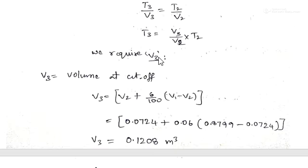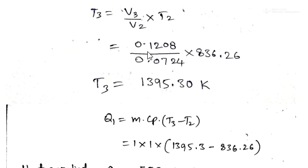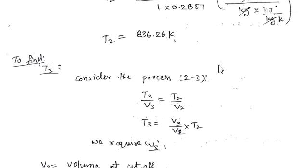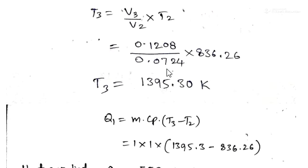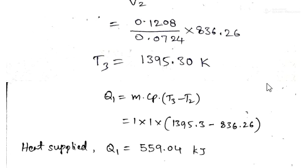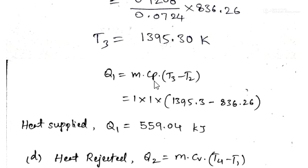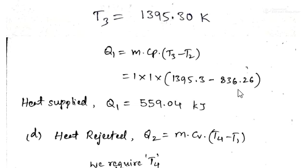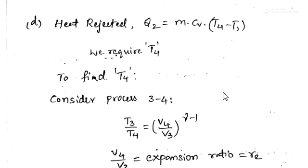T3 = (V3 by V2) × T2 = (0.1208 by 0.0724) × 836.26 = 1395.30 Kelvin. Heat supplied = mCp(T3 − T2) = 1 × 1 × (1395.3 − 836.26) = 559.04 kJ.